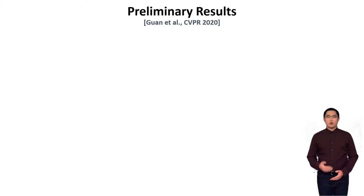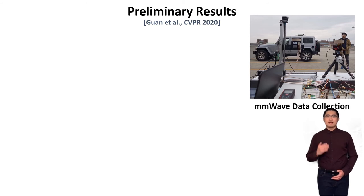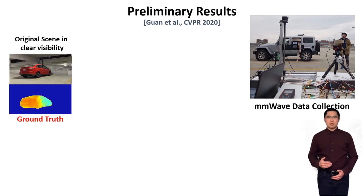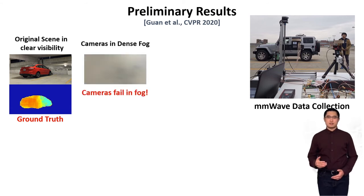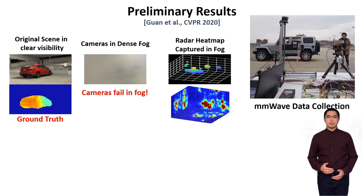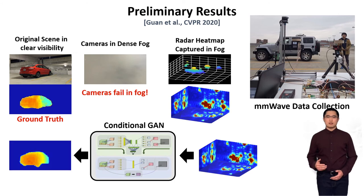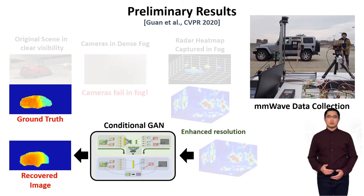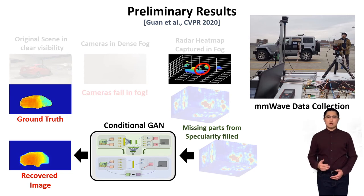We built a preliminary version of our system and collected a lot of real-world millimeter wave data of cars. Here you can see the original scene and the corresponding ground truth depth map from a stereo camera. We then simulate fog using a fog machine — as you can see, the car is no longer visible in the camera. However, the millimeter wave radar is still able to capture reflections from the car. Here I'm showing the 3D radar heatmap and the 2D projections. Once we pass the 3D heatmap through our network, it is able to reconstruct the high-resolution depth map that closely matches the ground truth. The neural network is able to fill in the missing parts of the car due to specularity and also reject artifacts.